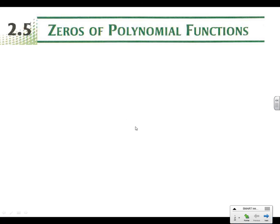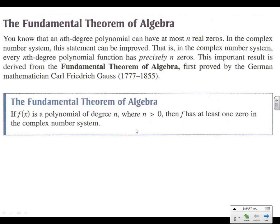All right, 2.5. We're going to find the zeros of polynomial functions, so strap yourself in. There's a lot to cover on 2.5. So we know this already — this is a review.